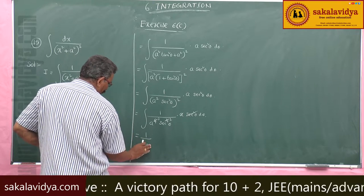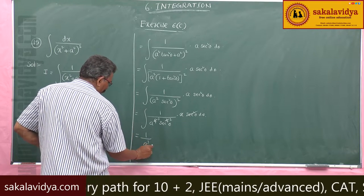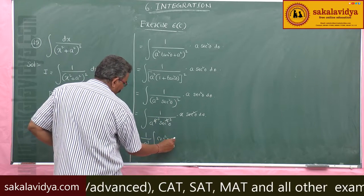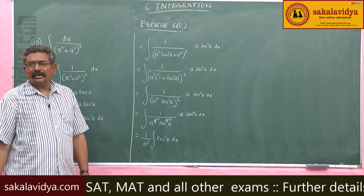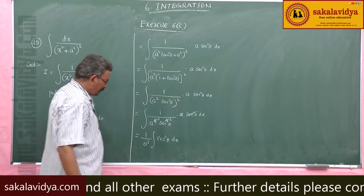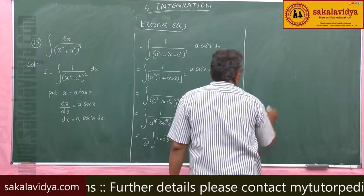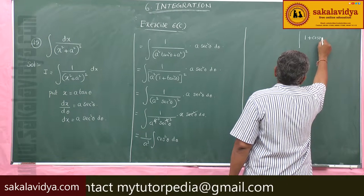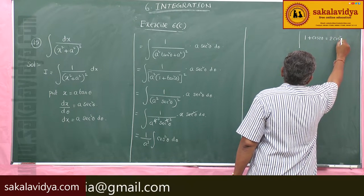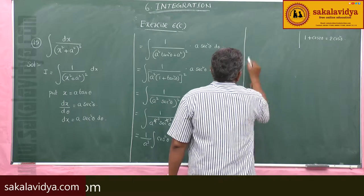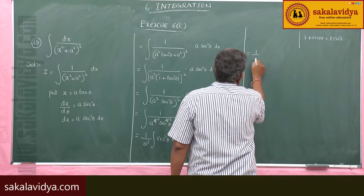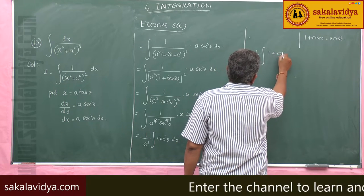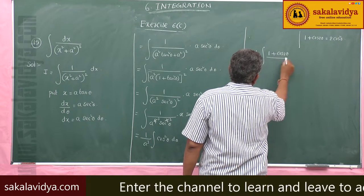This simplifies to 1/a³ common, integral of 1/sec²θ, which is cos²θ·dθ. Now we substitute cos²θ using the identity: 1 + cos 2θ = 2cos²θ. So we have 1/a³ integral of (1 + cos 2θ)/2 dθ.